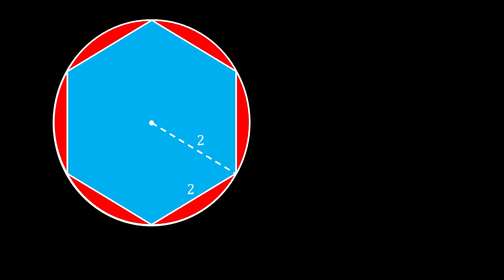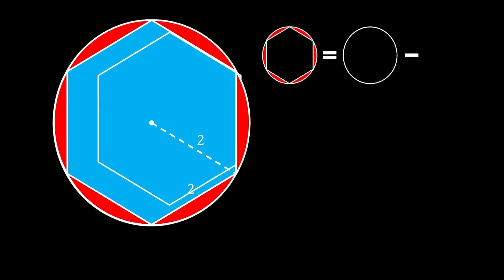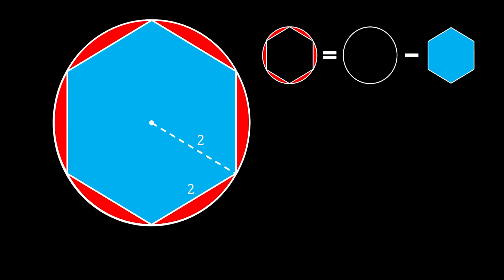We know that this is a regular hexagon because all the sides are equal to the radius of our circle, which is equal to 2. Now, all that we need to do to find our red area is to subtract the area of the circle from the area of the regular hexagon. Let's translate this into the formula: the area equals the area of the circle — which is πr², and we already know this is 4π from the conditions of our problem — minus the area of the regular hexagon, which equals 6 times the area of an equilateral triangle. Just to remind you, a regular hexagon is made out of 6 equilateral triangles, so we have this formula.